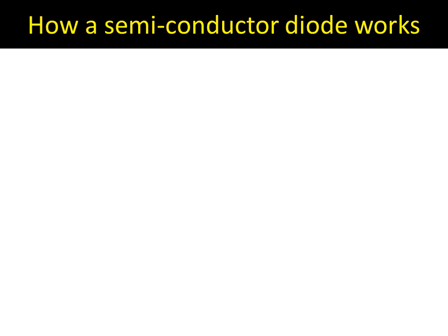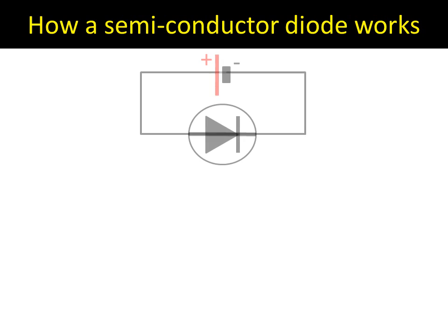We've looked at what a diode does, but how does it actually work? You don't need to know this for the Year 12 syllabus — it's just out of interest. Basically, a diode only allows electricity through in one direction, so it only allows current through in one direction.